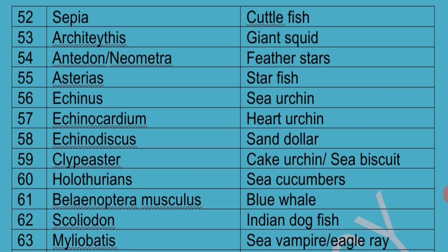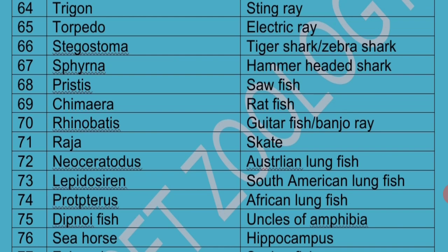Myliobatis is called Sea Vampire or Eagle Ray. Trigon is called Sting Ray. Torpedo is called Electric Ray. Stegostoma is called Tiger Shark or Zebra Shark because it contains stripes like a tiger or zebra. Sphyrna is commonly called Hammerheaded Shark because its snout is stretched like a hammer.